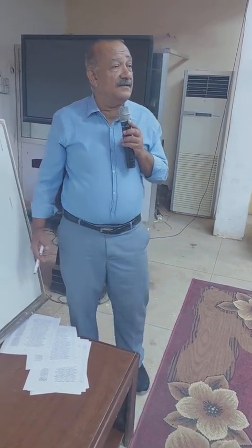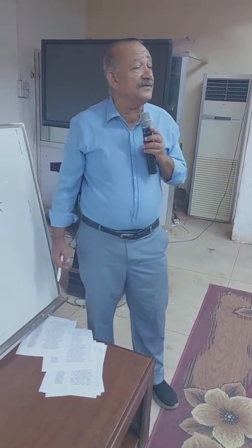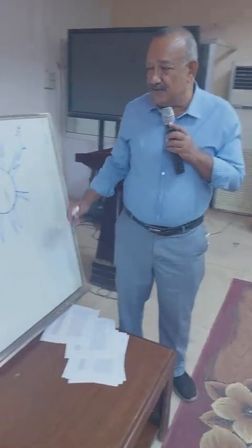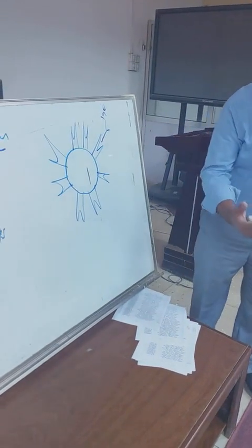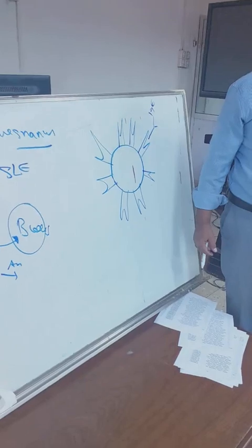In an atopic individual, they produce IgE antibodies to the allergen. So if you are allergic to dust, your body will produce IgE against dust.